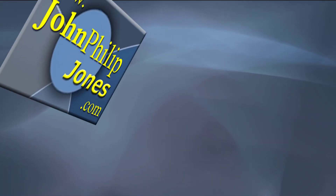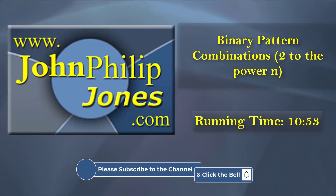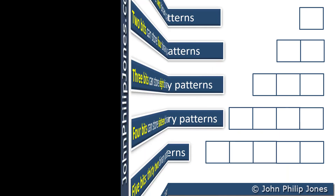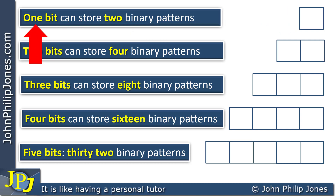In this video I'm going to show you how to calculate the number of binary patterns that are possible for a fixed number of bits. We looked at this slide in the previous video, and if we consider the fact that we have one flip-flop here — one storage area capable of storing one bit, either a zero or a one — that means we can have two binary patterns.